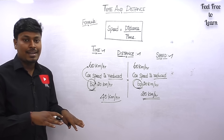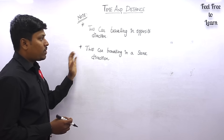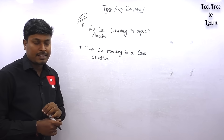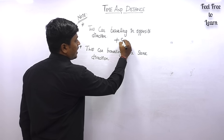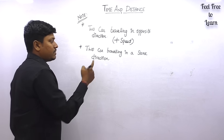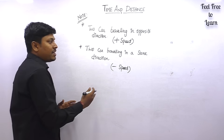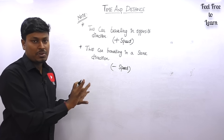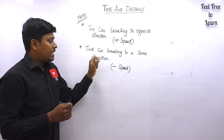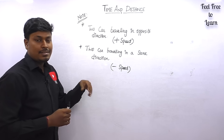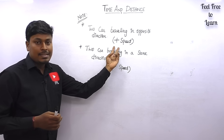Finally, two important notes on relative speed: if two cars, cycles, trains, or people travel in opposite directions toward each other, you add both speeds. If they travel in the same direction, you subtract the speeds. This applies to any moving objects — cars, cycles, trains, or men running. Opposite direction: add the speeds. Same direction: subtract the speeds. This is called relative speed.